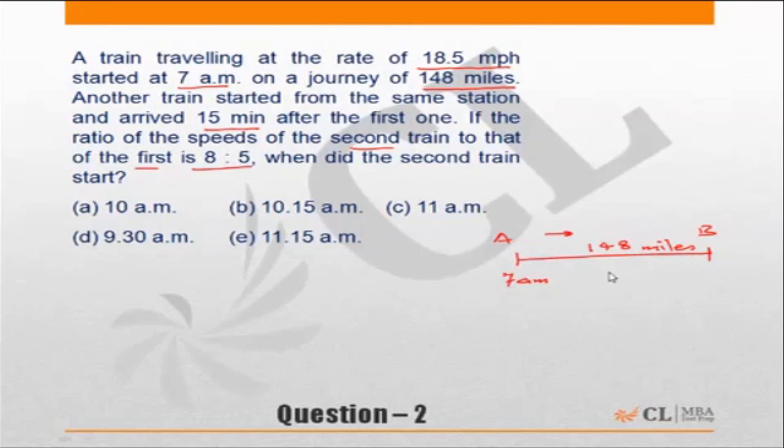And the speed of the train is 18.5 miles per hour. Another train started from the same station and arrived 15 minutes after the first one. So let us first find out what time did the first train, which started at 7 AM, reach the destination.